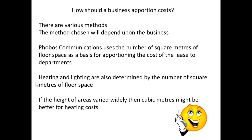How should a business apportion costs — in other words, how should it share them out? There are different methods and they will depend on the business. In the case of Phobos Communications they are using the number of square metres of floor space to apportion the cost of the lease to the departments, and for heating and lighting and other overheads as well. In some cases, if the height of the areas were significant, you might want to use cubic metres rather than square metres of floor space.